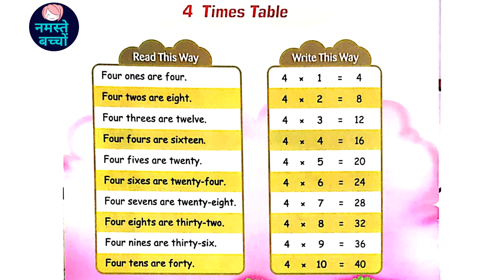4 5's are 20, 4 6's are 24, 4 7's are 28.